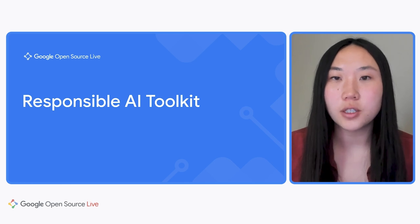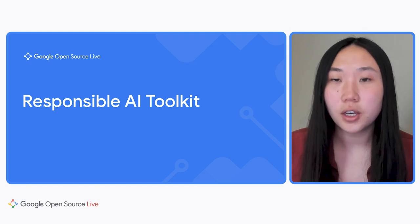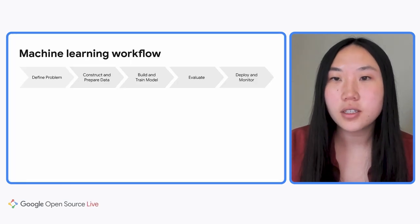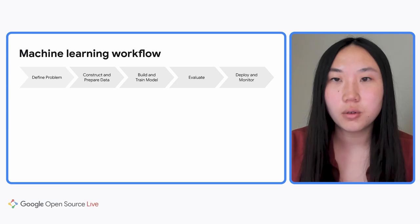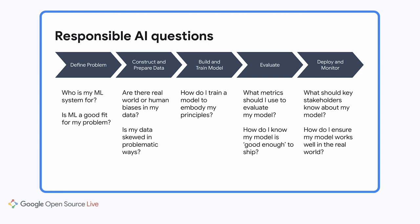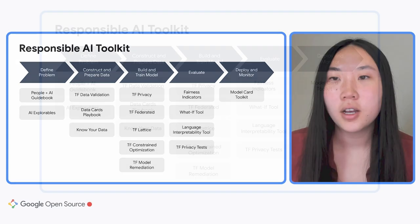We developed the responsible AI toolkit to operationalize these principles at Google. We launched the toolkit a few years ago and have been adding resources to it since. To understand the toolkit, let's take a look at a typical machine learning workflow. Building AI responsibly means answering hard questions at each step of the lifecycle, from problem definition through to model training, testing, and deployment. The responsible AI toolkit is a collection of technical resources and tools to help you and your team answer these hard questions at each step.